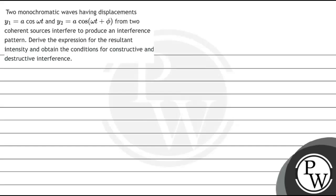Hello. Let's see this question. It says two monochromatic waves having displacement Y1 as A cos(ωt) and Y2 as A cos(ωt + φ) from two coherent sources interfere to produce an interference pattern. Derive the expression for the resultant intensity and obtain the condition for constructive and destructive interference.